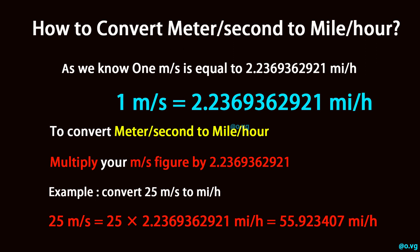Example: convert 25 meter per second to mile per hour. 25 meter per second is equal to 25 multiplied by 2.2369362921 mile per hour, which equals 55.923407 mile per hour.